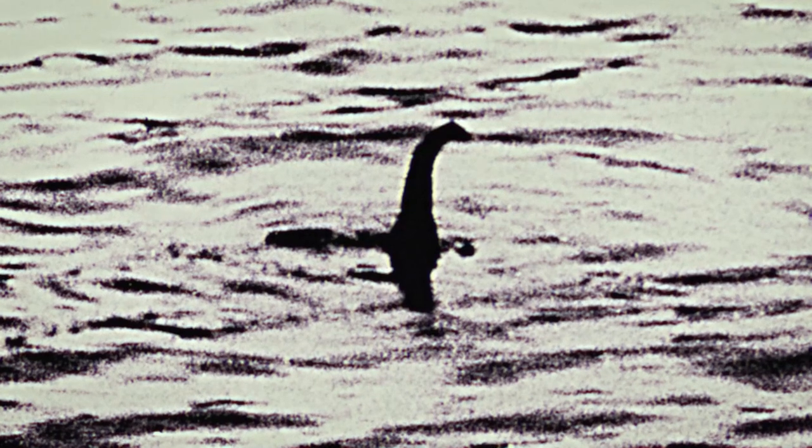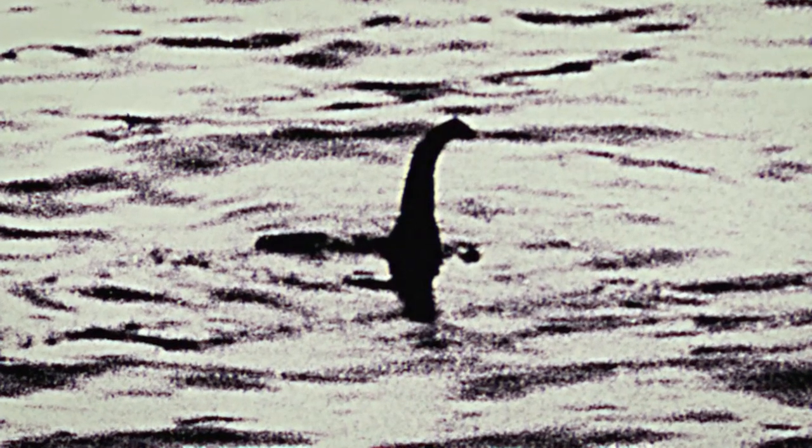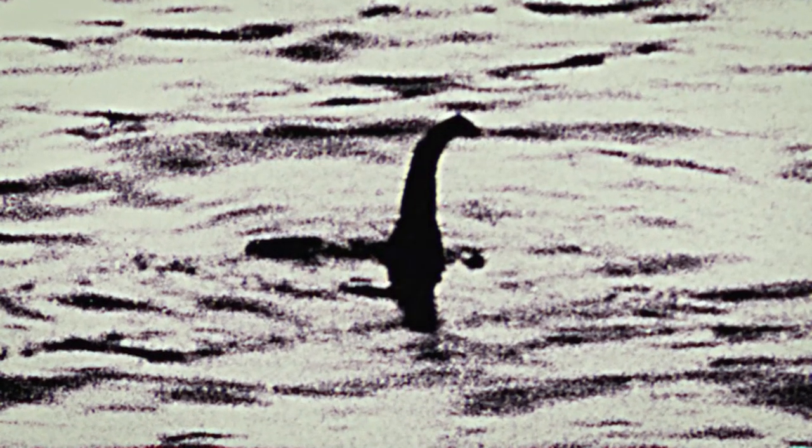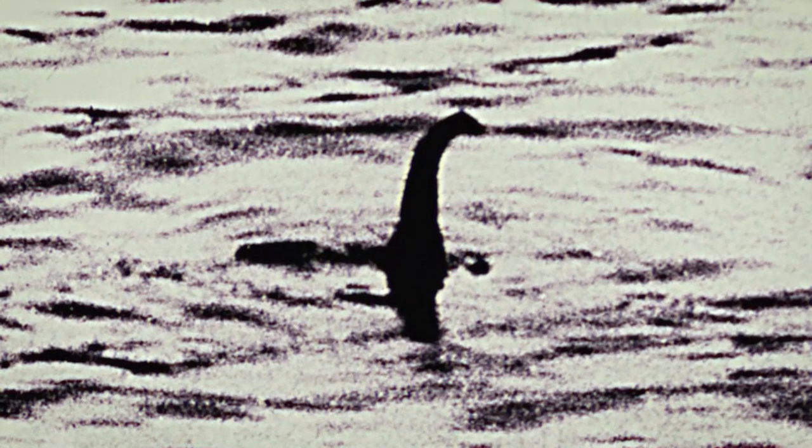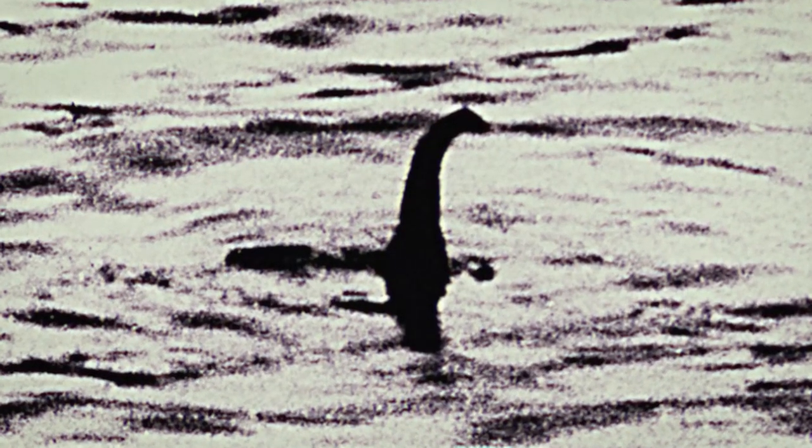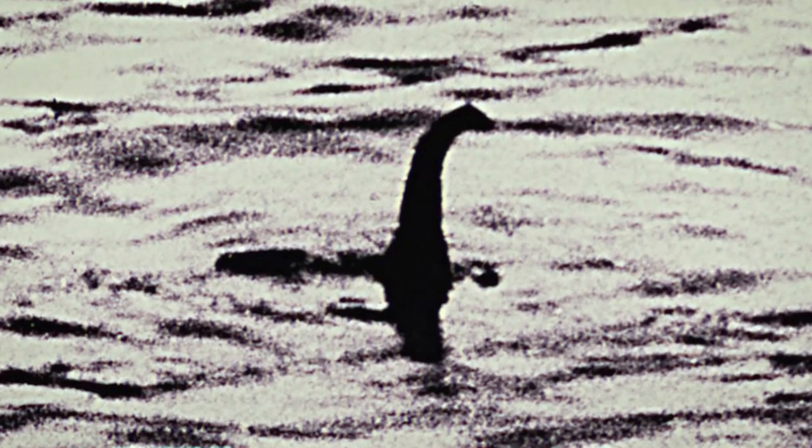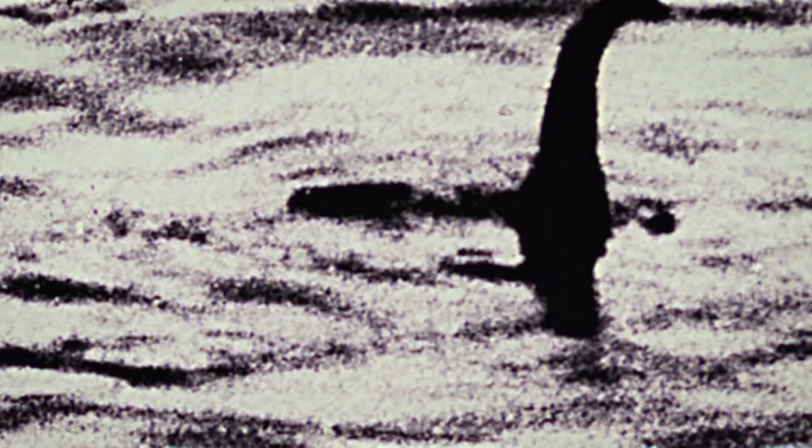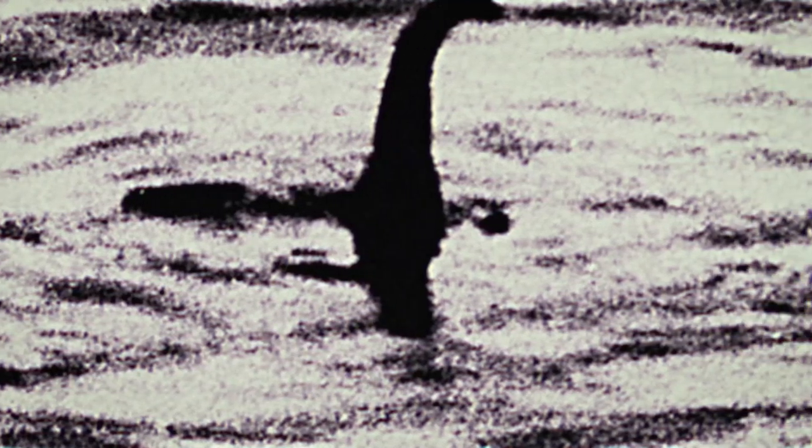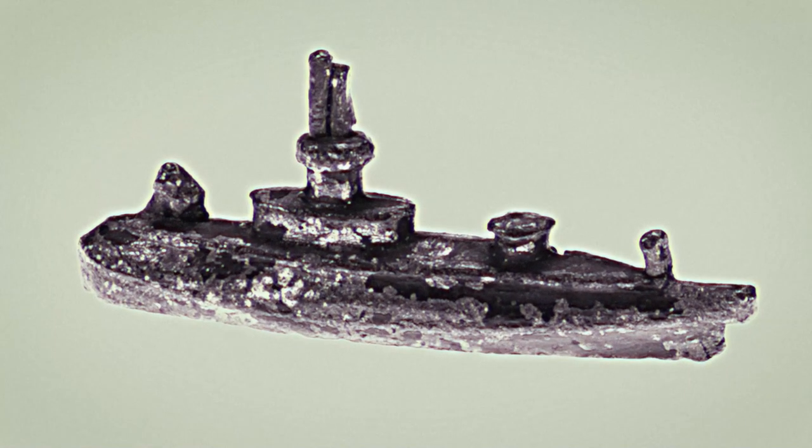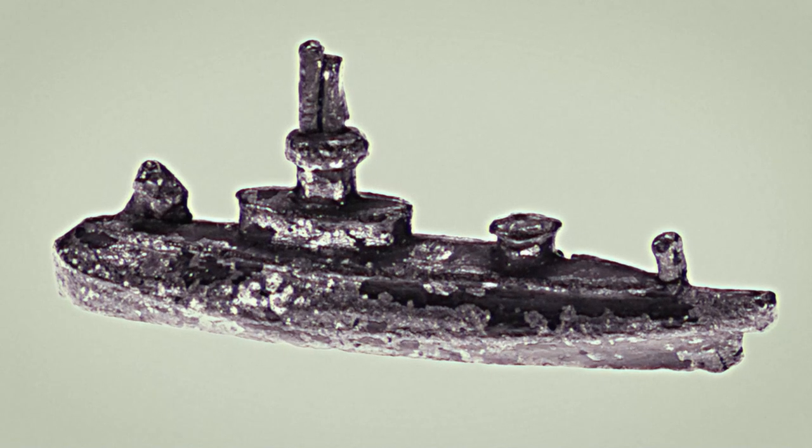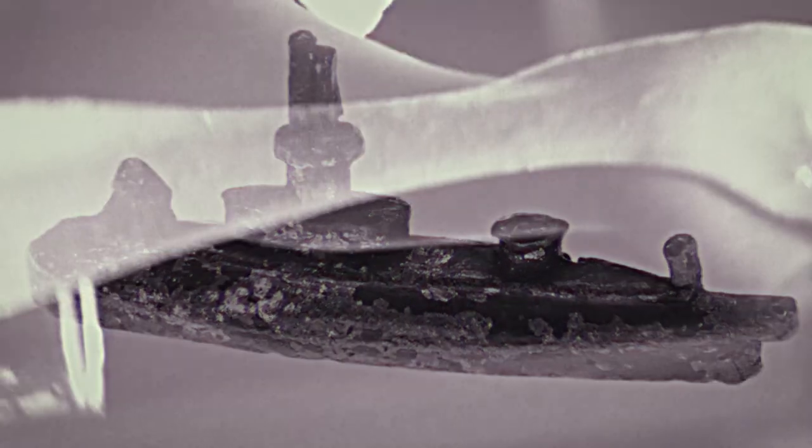Fast forward to 1997. Disappointingly, analysts finally determined that the famous photograph, first circulated in 1934, is fake. The size of the water ripples imply that the object in question is actually much smaller than it appears in the capture, said to be only a few feet long at most. It's then determined that the figure is simply a toy submarine with a putty neck, to imitate Nessie's speculative shape.